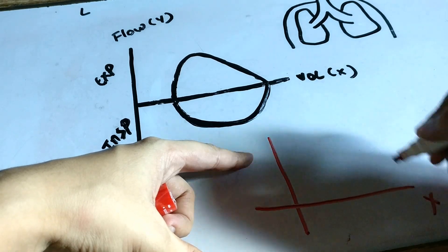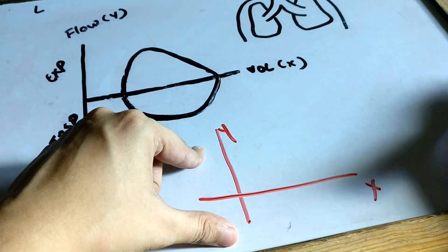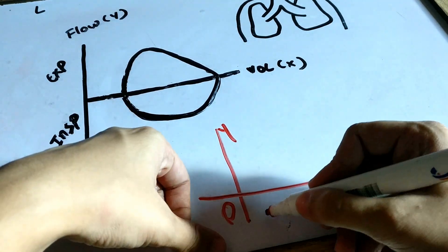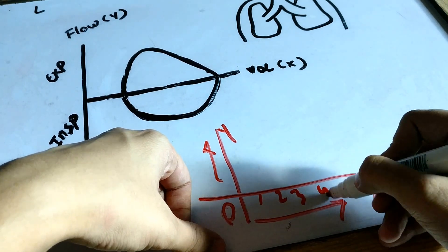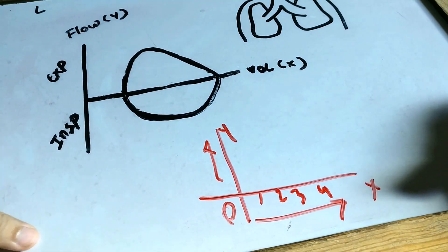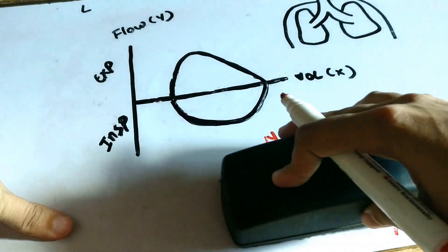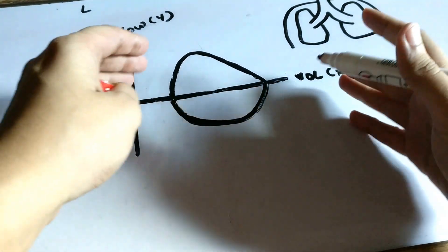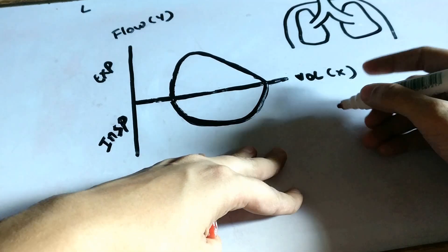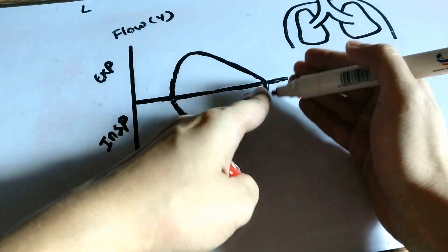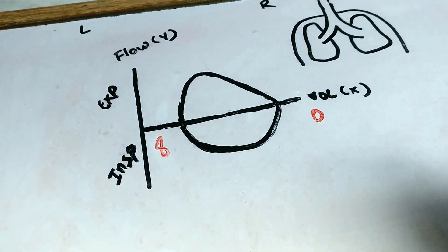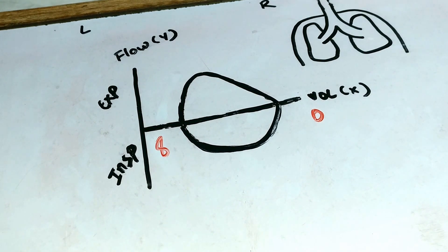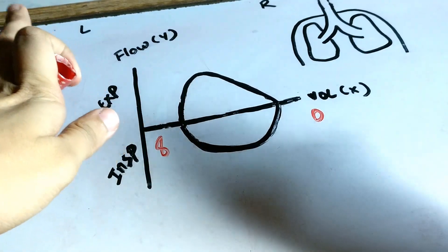So normally when you plot the x and the y-axis, the intersection between the two axes is at zero and then the values increase along both axes — 1, 2, 3, 4, and so on. But on the flow volume loop, this isn't the case. The smaller number is on the right side of the x-axis, so zero will be somewhere on the right and larger values like 8 will be on the left side. Once you remember this, the flow volume loops are quite easy.